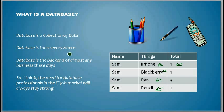If you want to write it, I can just write it like a spreadsheet. I can put these columns: name, things, total. And then the name is me, which is Sam, and then iPhone one, BlackBerry one, pen three, pencil two.